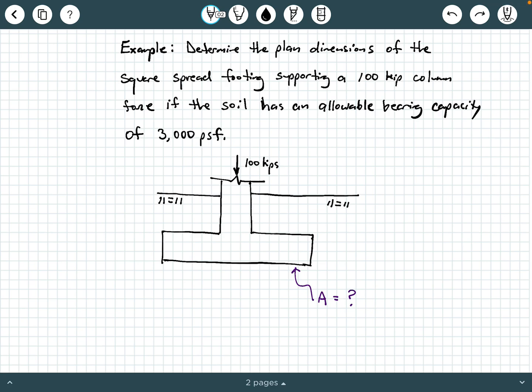Hey everybody, Dr. A here, and in this video we are going to explore an example in which we are asked to determine the plan dimensions of the square spread footing that is supporting a 100 kip (100,000 pounds) column force if the soil has an allowable bearing capacity of 3,000 PSF. And if you remember, PSF means pounds per square foot.